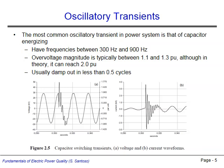Most often, oscillatory transients are caused by the switching of capacitor banks. These transients have frequencies between 300 and 900 Hz, produce voltage spikes between 1.1 and 1.3 per unit, and damp out in less than half a cycle. The figure shows the voltage and current waveform characteristics of a capacitor switching transient.